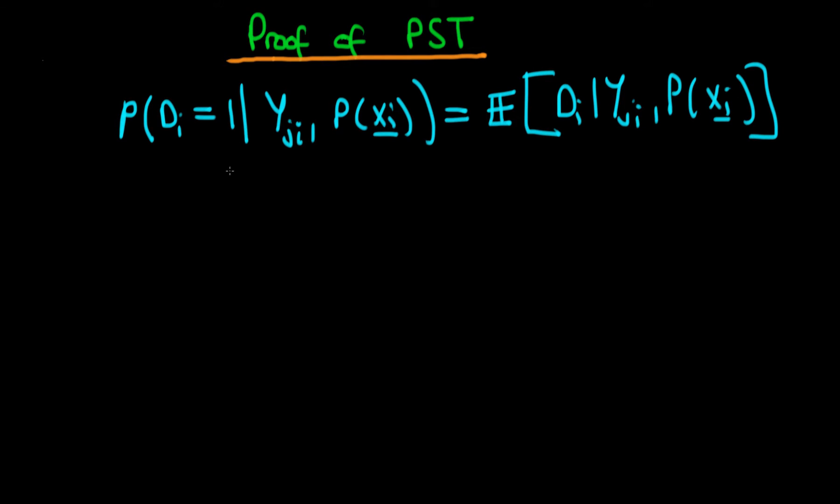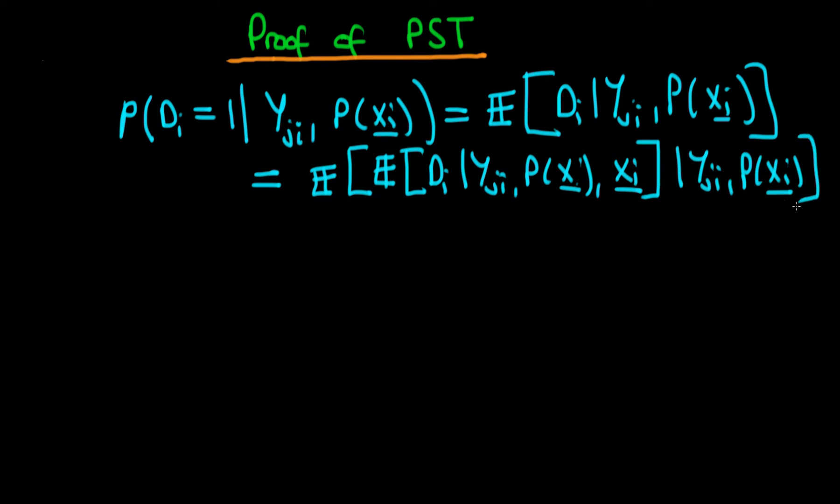We can actually rewrite this using the law of iterated expectations in its nested form. We can rewrite this as the expectation of the expected value of di, given yji and also given the propensity score, and also given some other factor. The other factor I'm going to choose here is xi. So that's the inner expectation. The outer expectation, we are going to condition on yji and p of xi, just to ensure that we actually have exactly what we had in the previous row.